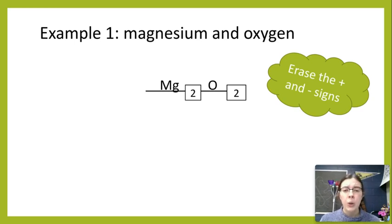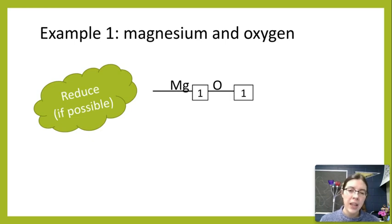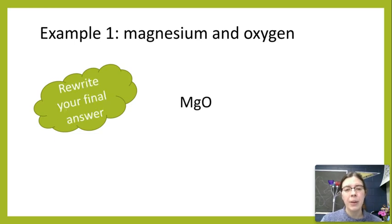So Mg2O2. And in this case, if we think about it, we can go ahead and reduce that to one and one because both numbers are divisible by two. So final step, we don't have any polyatomic ions, so we don't need to worry about that. But final step is going to be rewriting this to get MgO.